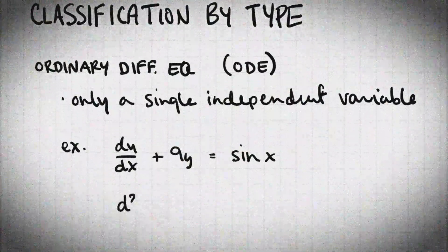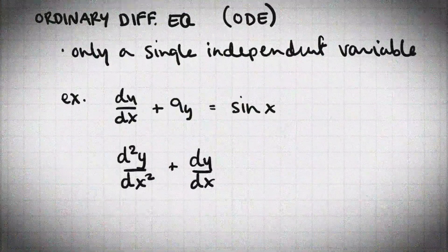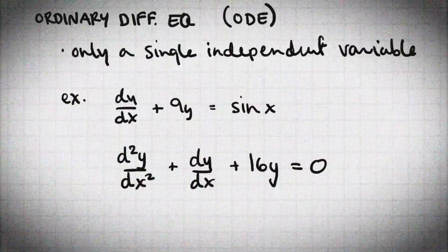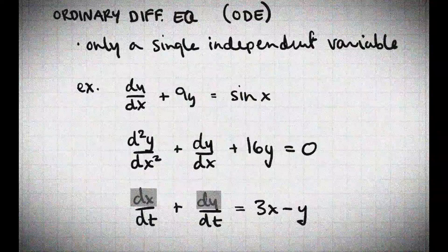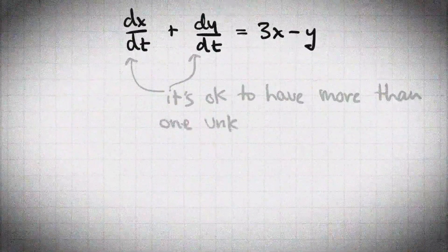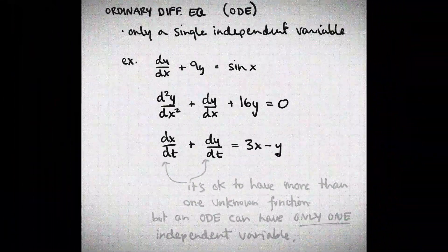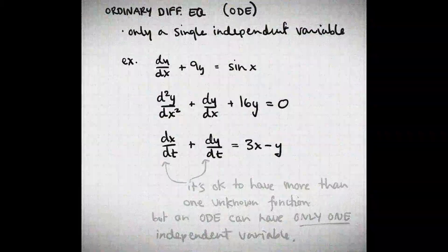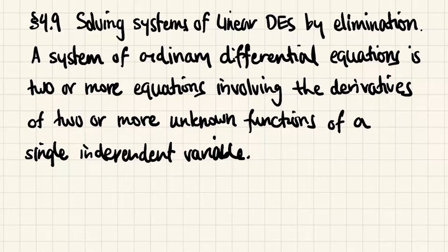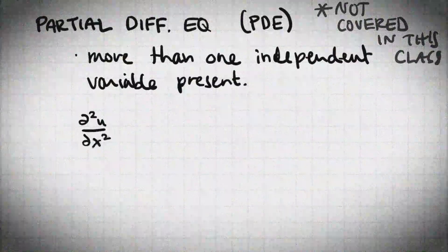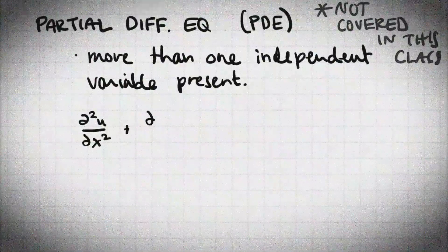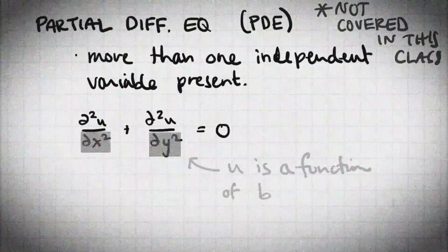The word 'ordinary' here refers to the fact that no matter how many unknown functions we have or how many dependent variables we're working with, there's only one single independent variable — so they're all functions of x or all functions of t. If we are dealing with more than one independent variable, then we consider that a partial differential equation or a system of partial differential equations, which we will not be dealing with in this course.